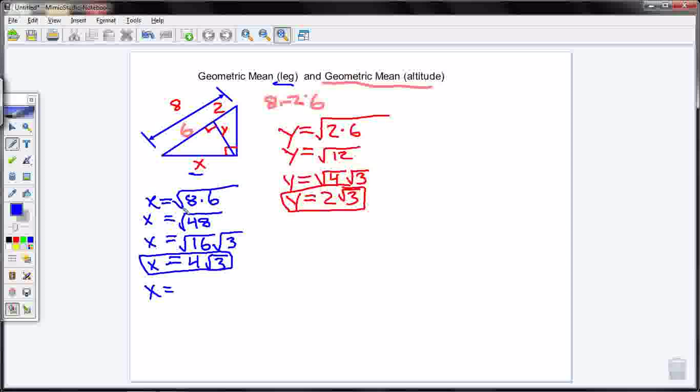So if I say x is equal to, what goes into 8? Well, I know it's 4 and 2. So 4, square root of 2. What goes into 6? I know 2 and square root of 3. So I have 4 times 2 is 8. 2 times 3 is 6. What's the square root of 4? I know the square root of 4 is 2.